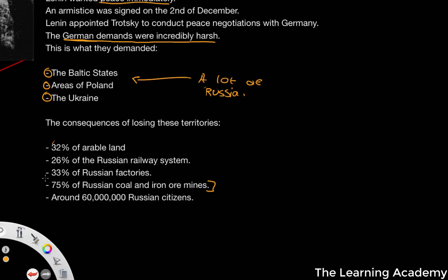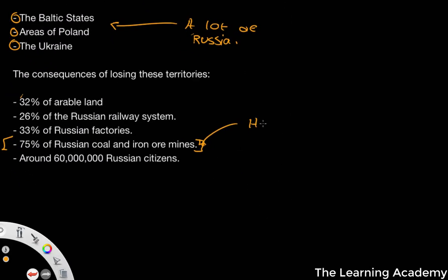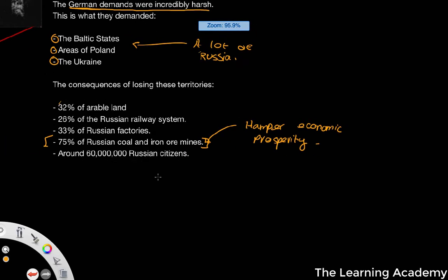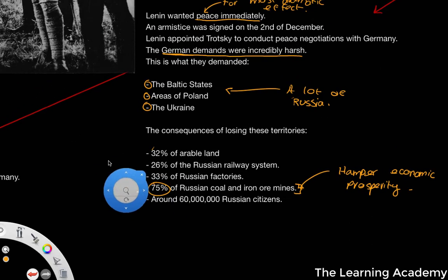Especially taking away 75% of Russia's natural supplies — this would hamper economic prosperity. One of the things a state can rely on for a greater economy is its natural resources. States with a high degree of natural resources and the means to exploit them tend to have a better economy. And they wanted to get rid of three quarters of those natural resources.